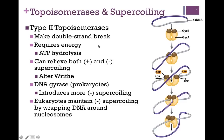Type 2 topoisomerases make a double-strand break — Type 2, two-strand break. Because of the dynamic movement of the DNA molecule, this process requires energy in the form of ATP hydrolysis. These enzymes can also relieve positive or negative supercoiling by altering the writhe. An example from prokaryotic systems is DNA gyrase, with subunits GyrA and GyrB, which binds double-stranded DNA, creates a double-stranded break, moves the double helix through that break, reseals it, and introduces supercoiling.